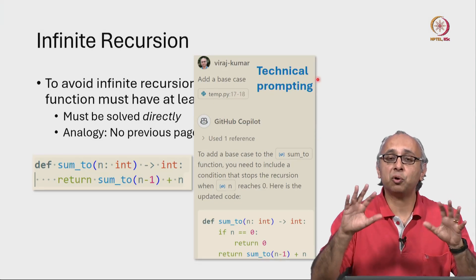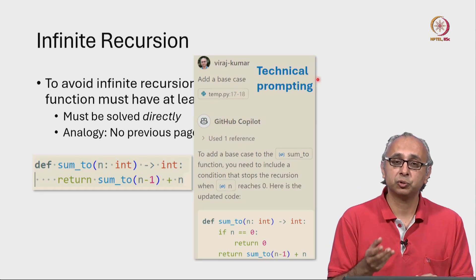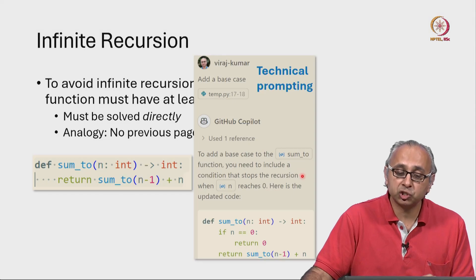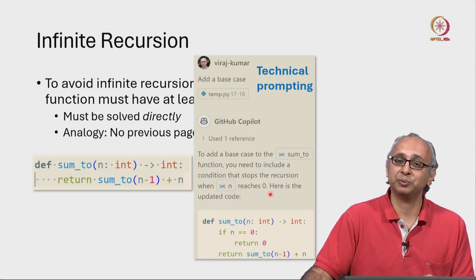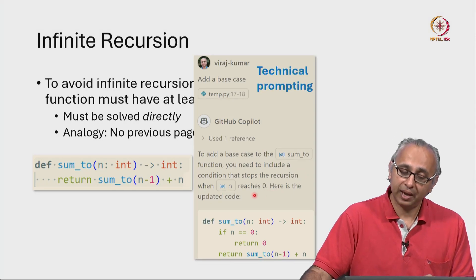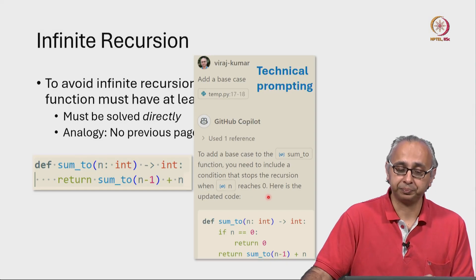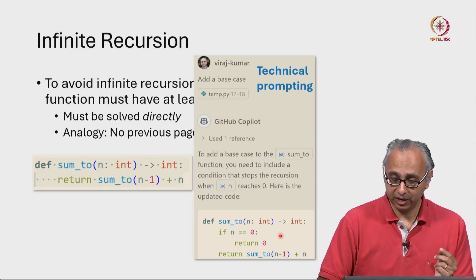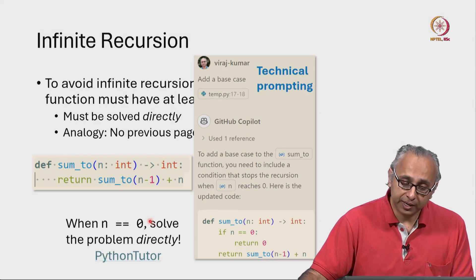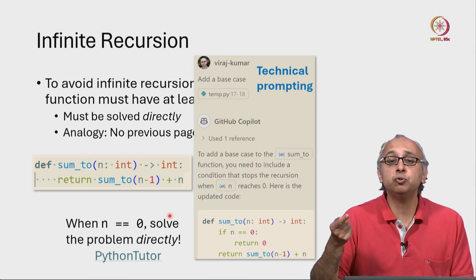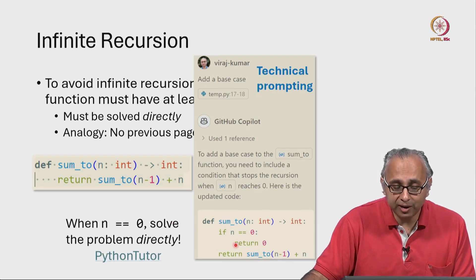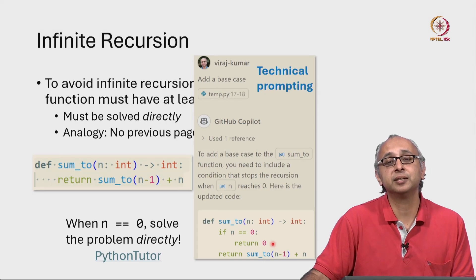And my generative AI now has all the information it needs to help me. It says to add a base case to this function, you need to include a condition that stops the recursion when n reaches 0. And here is the updated code. As you can see, they have added a base case. We check if n is equal to 0. And when n is equal to 0, we do not call the function recursively. Instead, we directly return 0.